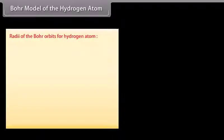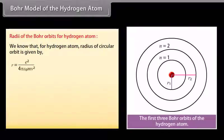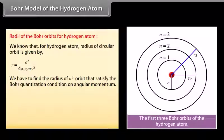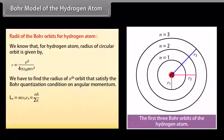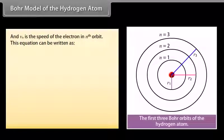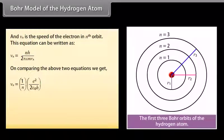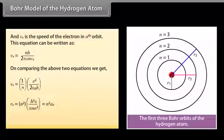For a hydrogen atom, the radius of a circular orbit is given by e²/(4πε₀mv²). To find the radius of the nth orbit satisfying Bohr's quantization condition: Lₙ = mvₙrₙ = nh/2π, where n = 1, 2, 3 and so on, and vₙ is the speed of the electron in the nth orbit. This gives vₙ = (1/n) × e²/(2ε₀h), and rₙ = n² × h²ε₀/(πme²) = n²a₀, where a₀ = 0.529 Å.